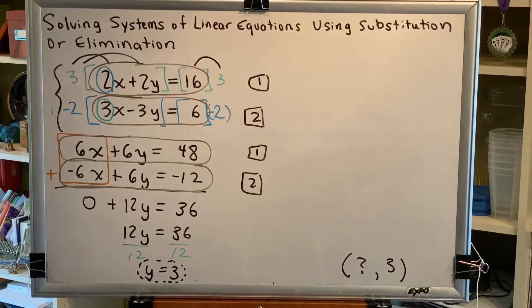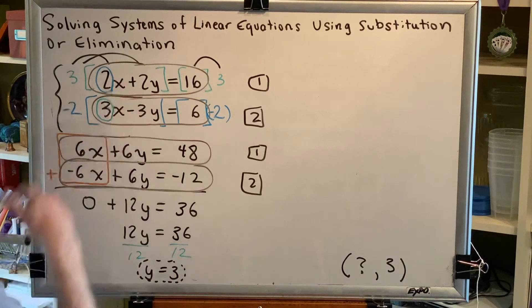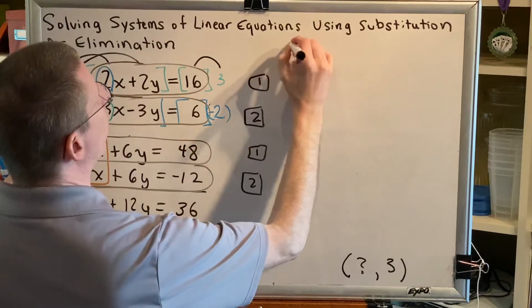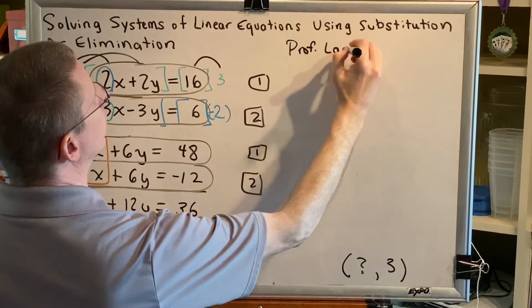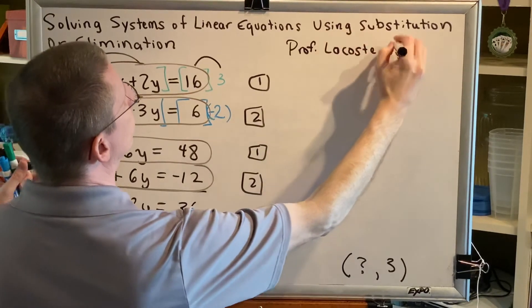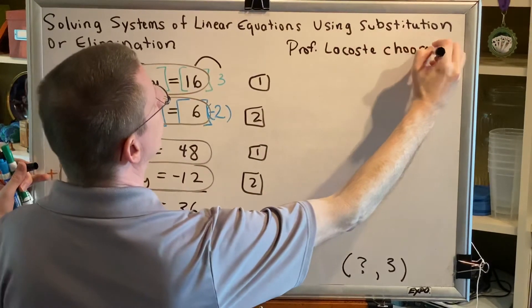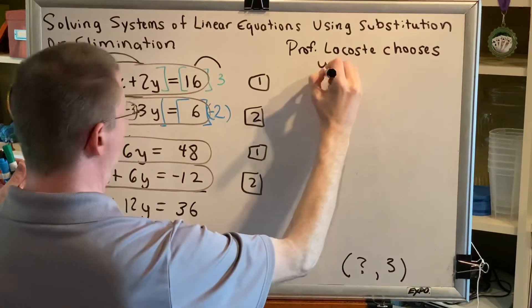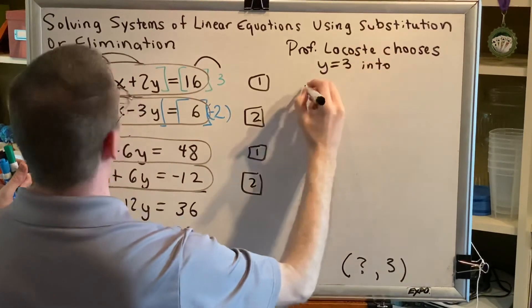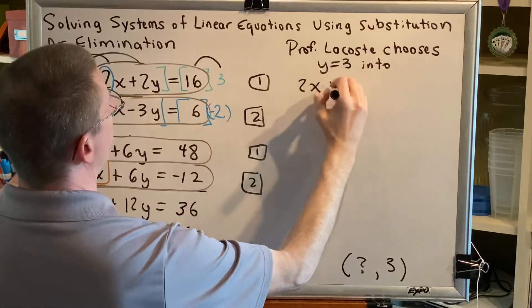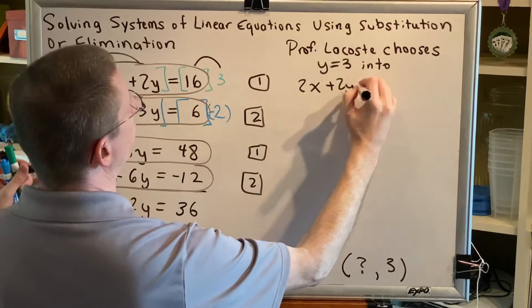Now, which one should we plug into? Well, my advice would be pick the one with the smallest numbers and the fewest negatives. That would be original equation 1. So I'm going to write Professor Lacoste chooses to plug y equals 3 into 2x plus 2y equals 16.